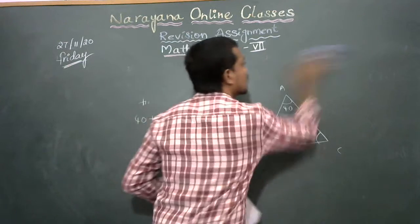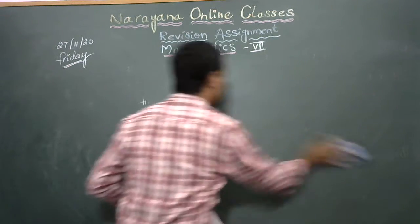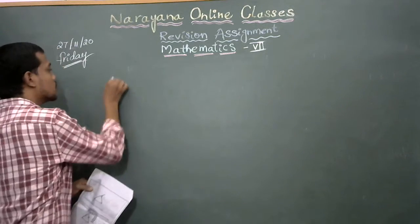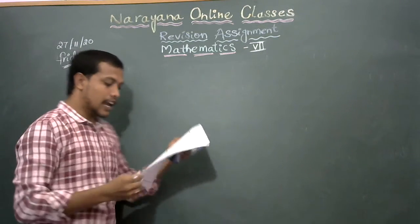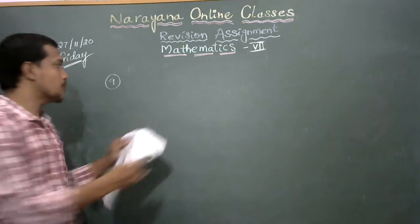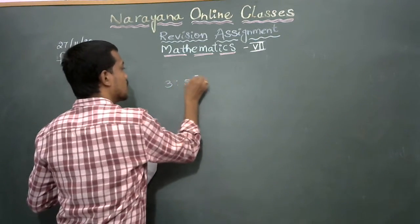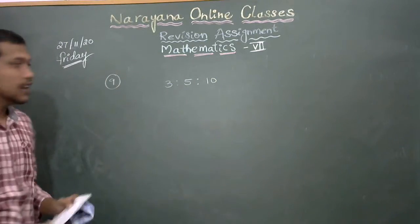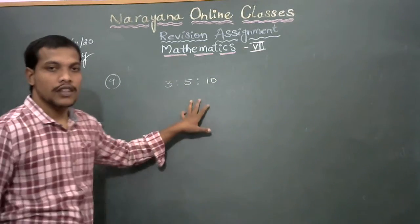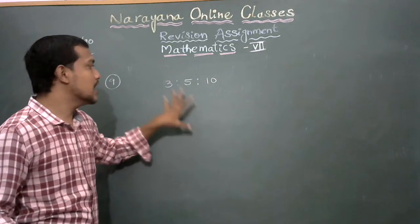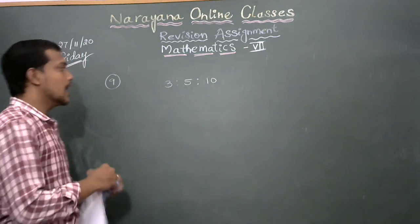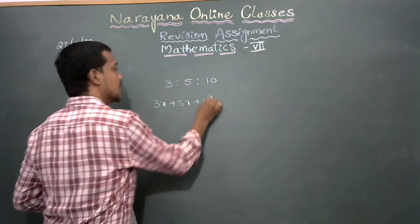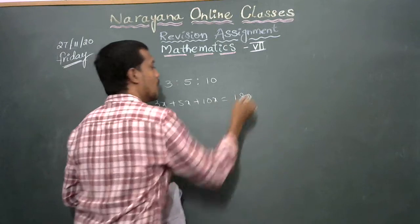Now the 9th question: the angles of a triangle are in the ratio 3 is to 5 is to 10. Find the measure of each angle. Given angles in terms of the ratio, we write 3x, 5x, and 10x. So 3x plus 5x plus 10x equals 180.